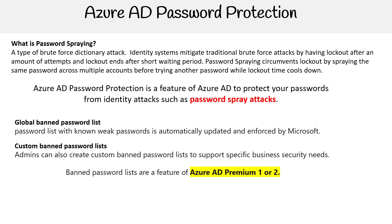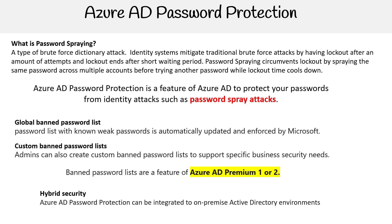To get banned password lists, you need Azure AD P1 or P2. For hybrid security, Azure AD Password Protection can be integrated into on-premises Active Directory environments.